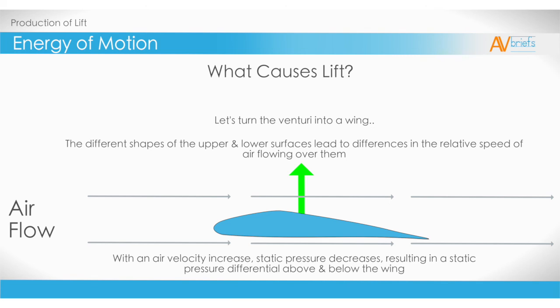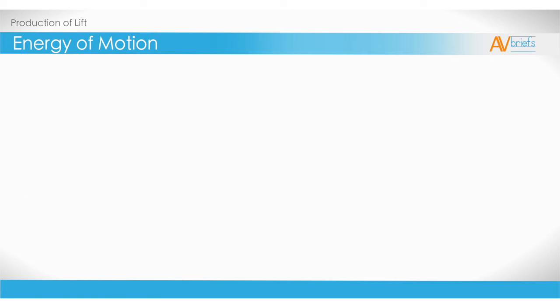We now have a lower pressure on top of the wing due to the increased airspeed, and we have a higher pressure below the wing, as it hasn't really had to change its speed, or to use another word, its velocity. That is how lift is produced.